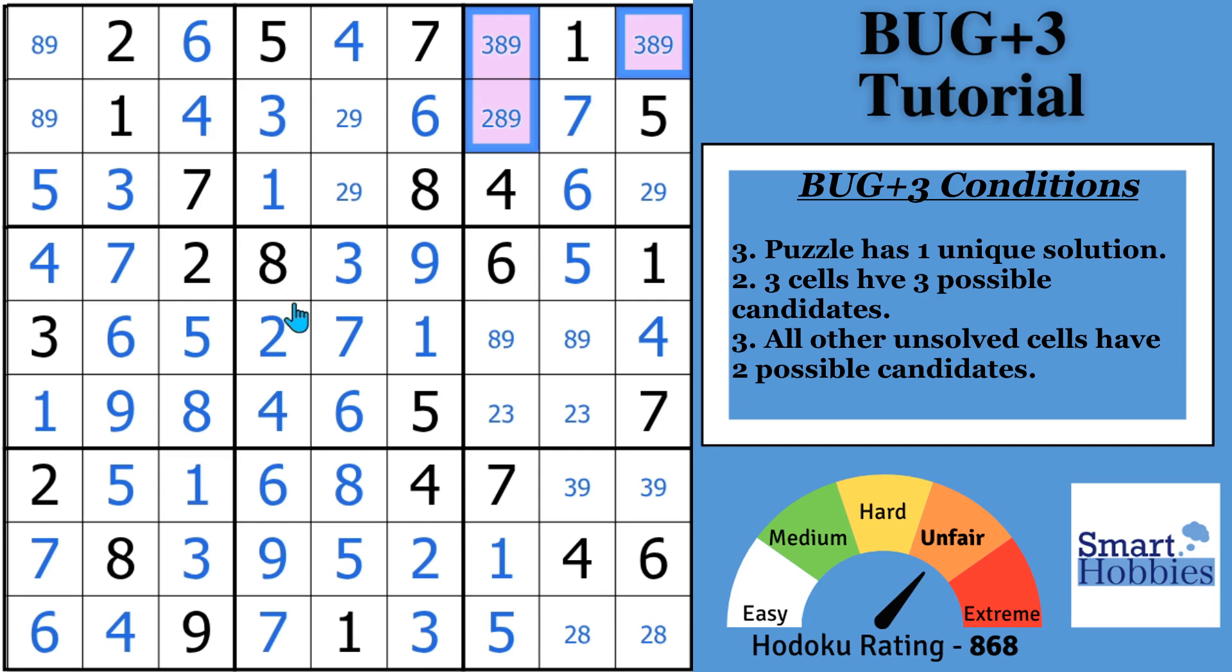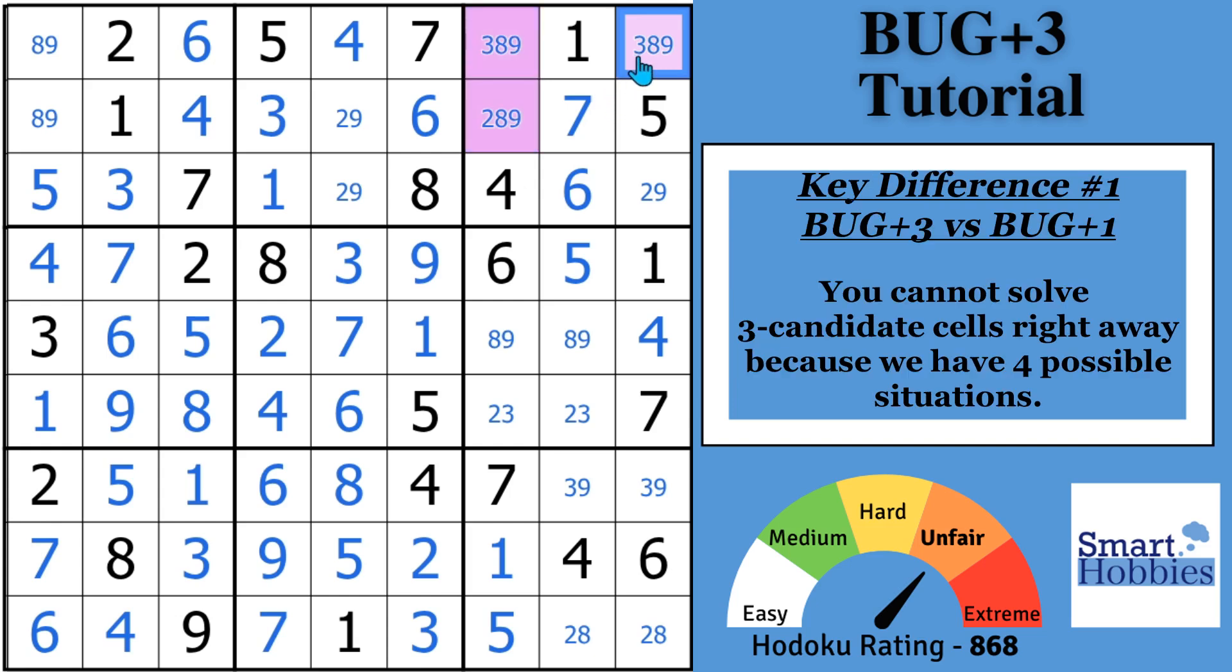We have a BUG+3 deal. And I need to tell you, you can solve this puzzle using other advanced strategies and methods. This is just showing you a shortcut that you could use in this situation to force a solve. What you do is, instead of being able to go, okay, this has to be the 9, and then this has to be a 9, and that has to be an 8, there's multiple situations that can occur here. And you're going to use that to make your elimination.